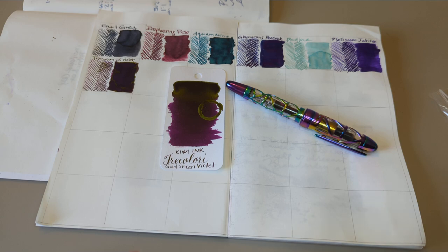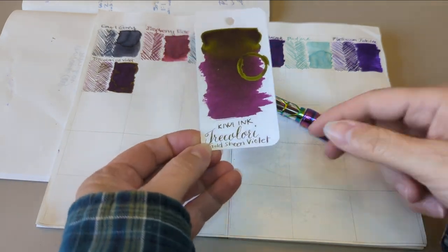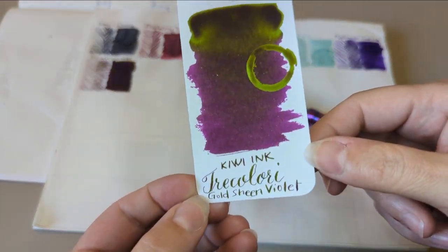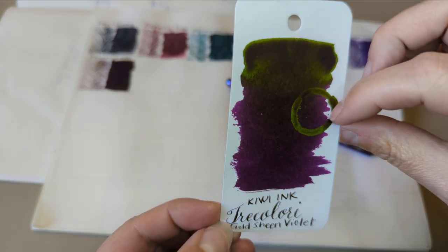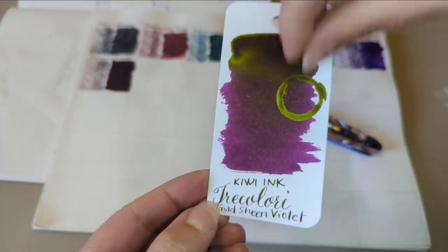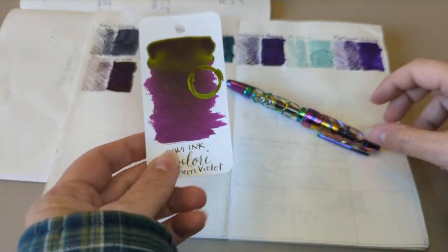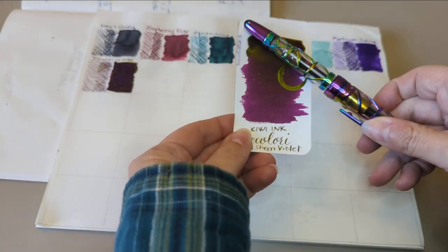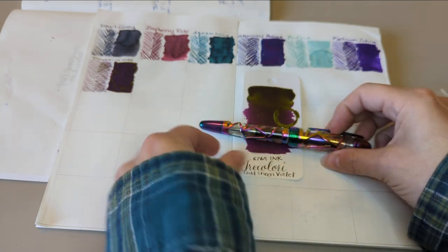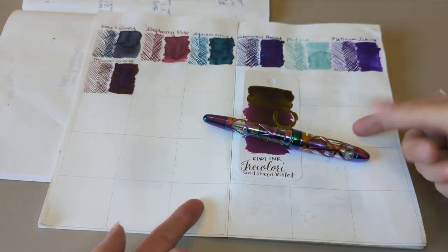So, yesterday was Kiwi Inks Tracolori Gold Sheen Violet. I love what happened when I smushed the lid on here. I smushed this on the bottle opening. Look, it's cool. And actually, look at it. It kind of goes really well with this pen. I feel like I made some really good choices yesterday with this.